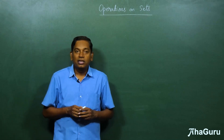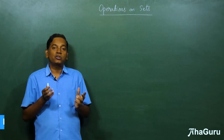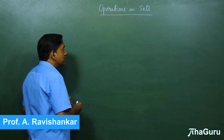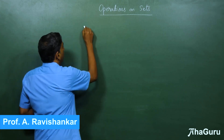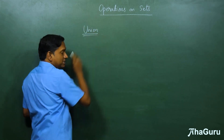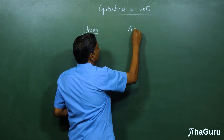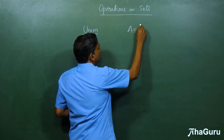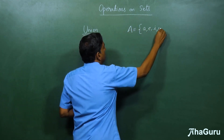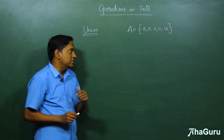Here we are going to learn about some operations on sets. The first idea is the idea of union of two sets. Suppose we have a set A — A, E, I, O, U — the set of all vowels.